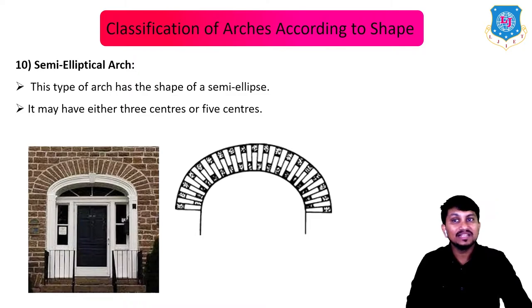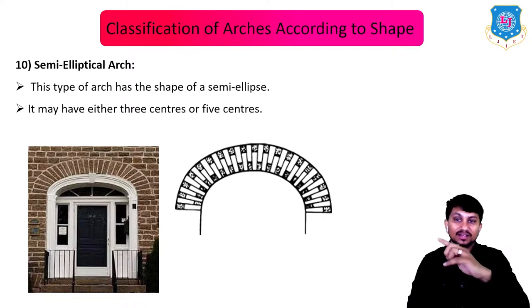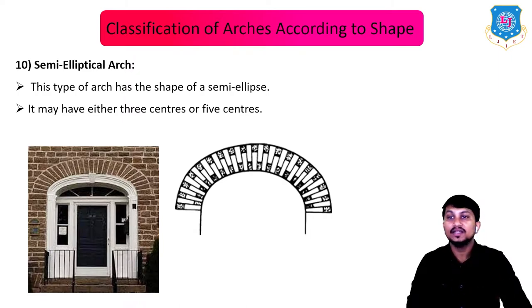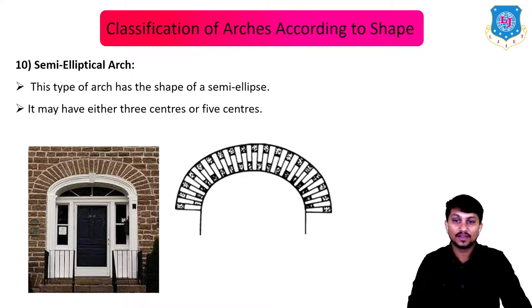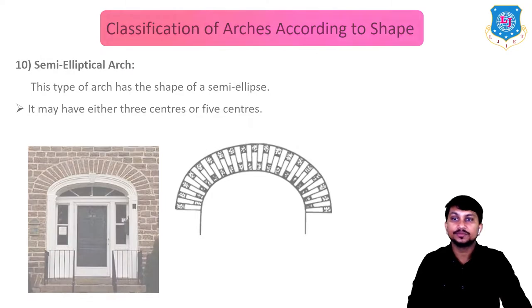Next is the semi-elliptical arch. This type of arch has the shape of a semi-ellipse and may have either three centers or five centers. These are the various types of arches according to shape.